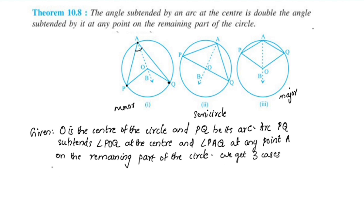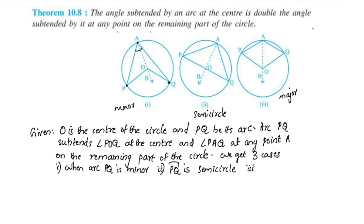First case: arc PQ is minor. Second case: arc PQ is a semicircle. Third case: arc PQ is major. These are the three cases we are given.